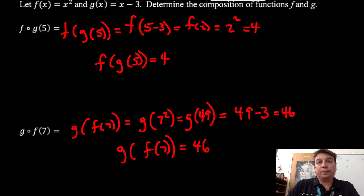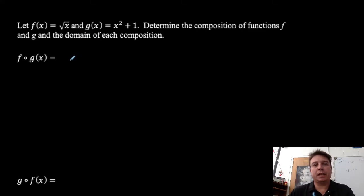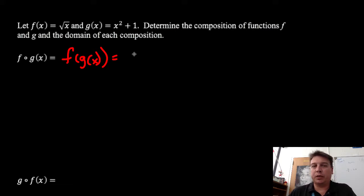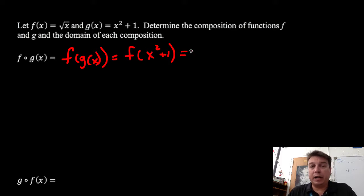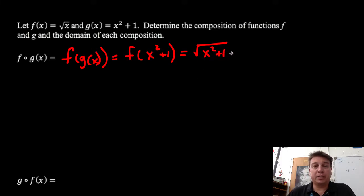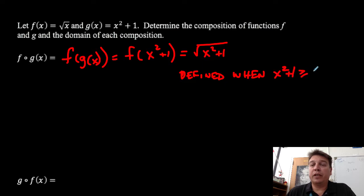Taking a look at the next example, we're going to find f of g of x, where g of x is x squared plus 1. So I want f of x squared plus 1. Thinking about the domain of g, we have no restrictions — it's defined over all real numbers. Now I need to take the square root, because that's what function f is, of x squared plus 1. So I have to think about this domain: it's defined when x squared plus 1 is greater than or equal to 0.